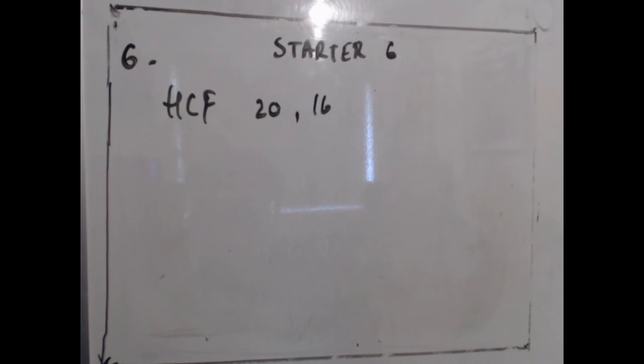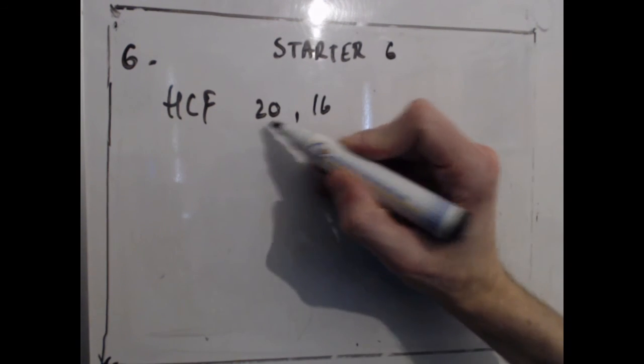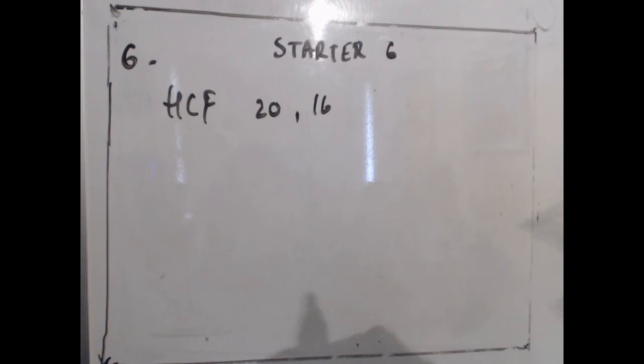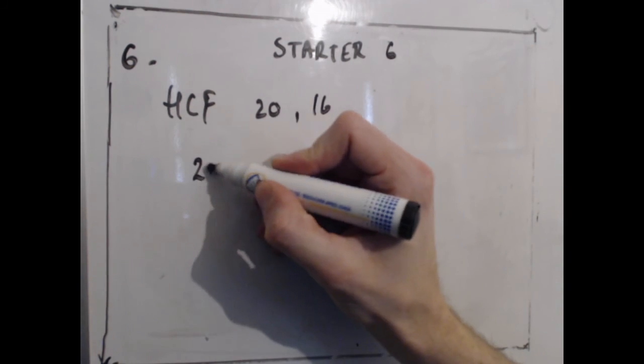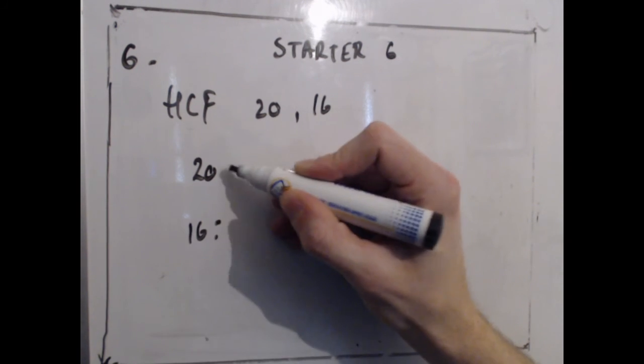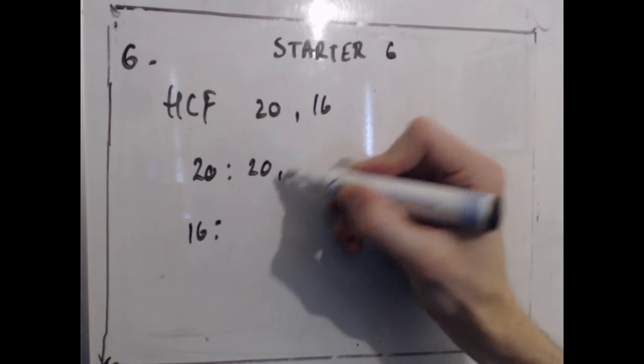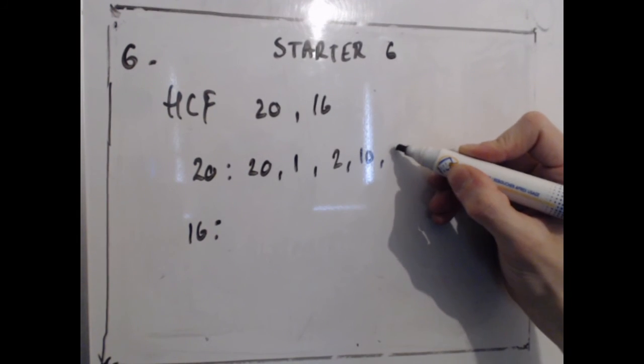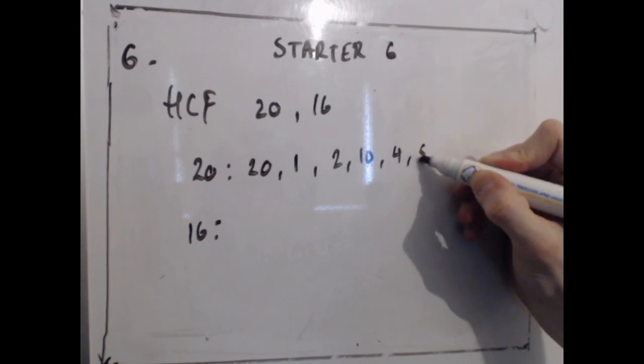And the last question is on the highest common factor, or HCF, and the highest common factor between 20 and 16. Now, we could split this into prime factors and do some working out and find out what it is, but as these are both quite small numbers, all I'm going to do is actually just list the factors of both numbers. So I know that's 20 and 1, I've got 2 and 10, I've got 4 and 5.